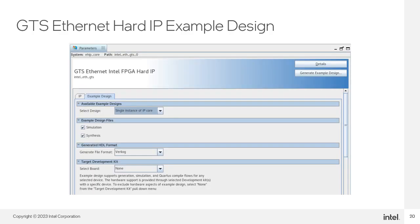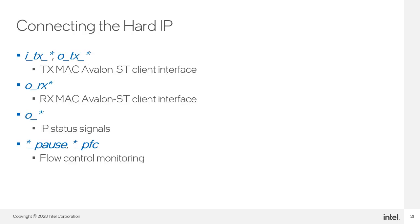Like many Intel IP cores, the IP parameter editor can generate an example design in Verilog and VHDL. The example design is a fully validated design for simulation and hardware testing, and you can target a specific development kit if available. After configuring the Hard IP, there are three main interfaces to connect your application logic: the transmit MAC Avalon Streaming client input interface, the receive MAC Avalon Streaming client output interface, and the IP status signal interface. A flow control interface is also provided to monitor flow control events.